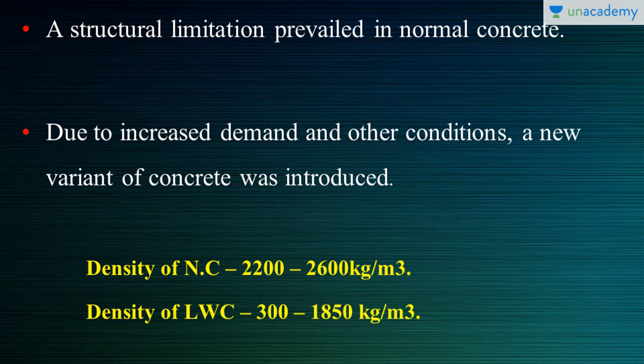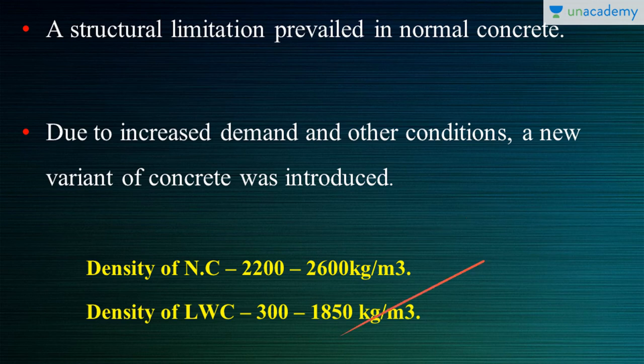This became a problem for areas where foundations are really weak — that is, where the soil is very weak and in places where you can't put that amount of pressure on the earth. In such cases, a new concrete was introduced known as lightweight concrete. The density of normal concrete is in the range of 2200 to 2600 kg/m³, whereas the density of lightweight concrete is between 300 to 1850 kg/m³.